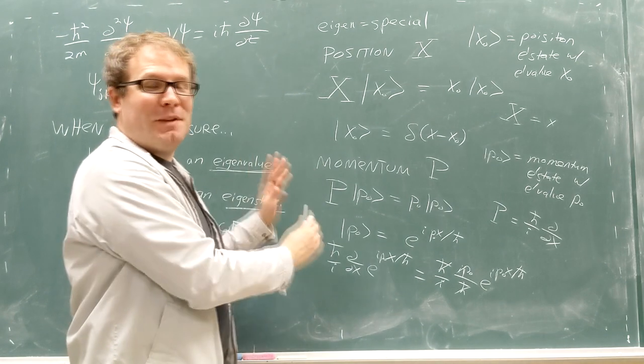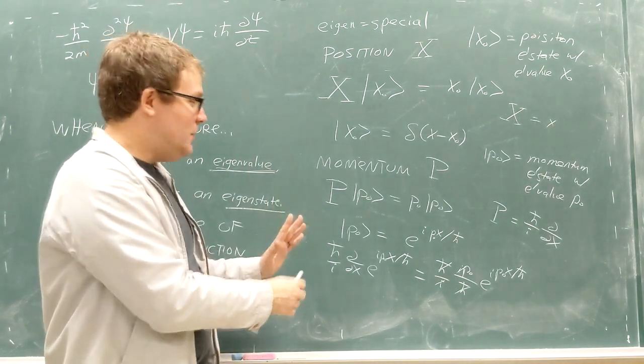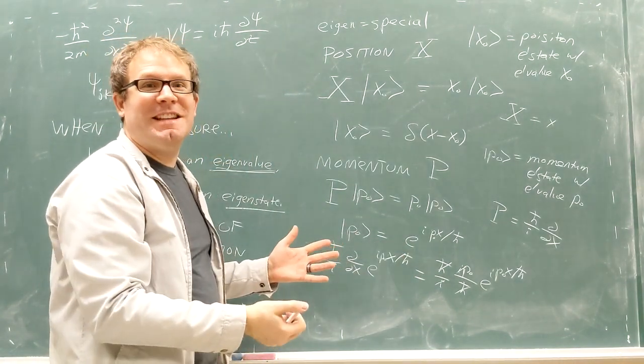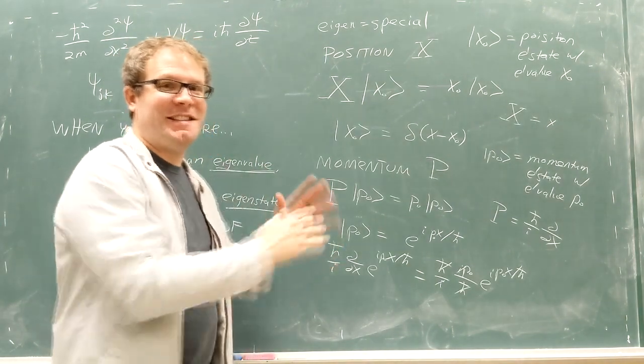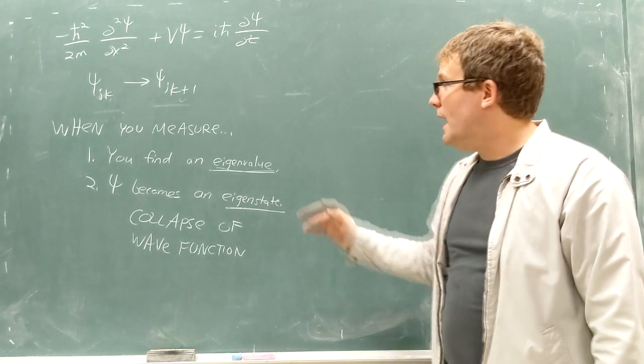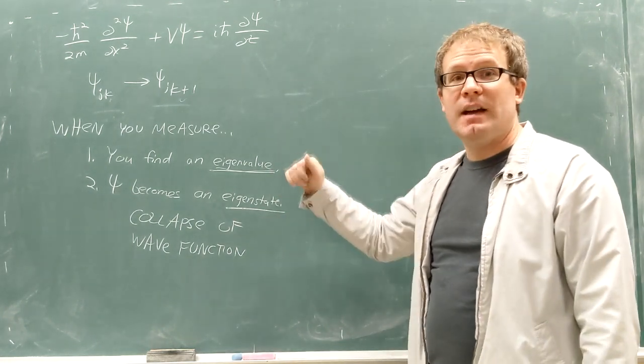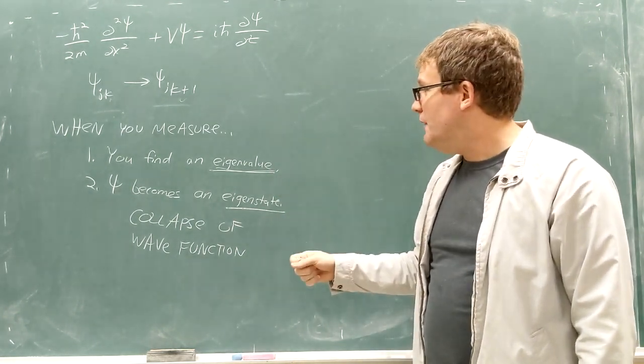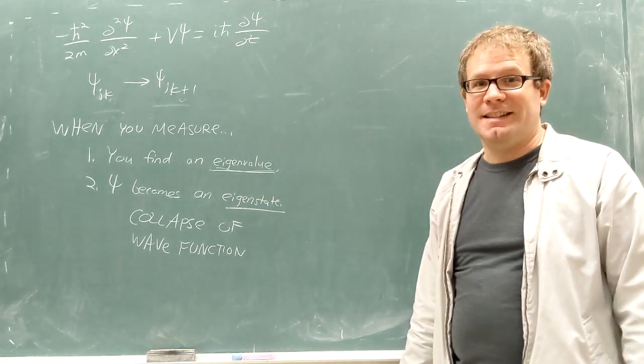Eigenvalues, it sounds complicated at first, but once you actually work on it, you say, oh, it's a thing that stays the same. It's a magic state that stays the same under the influence of an operator. So what we're going to add to our code, we're going to add these two steps to our code. When you take a measurement, you're going to find an eigenvalue, and then psi is going to collapse into an eigenstate.